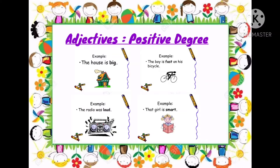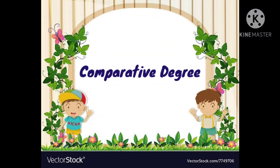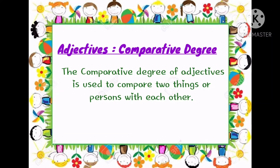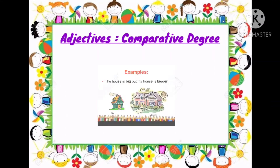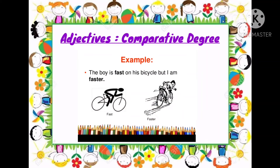Now let's study about the second degree of comparison, that is comparative degree of an adjective. The comparative degree of an adjective is used to compare two things or two persons with each other — it makes comparison between two things or two persons. For example, 'the house is big but my house is bigger' — here comparison is being made between two houses. Another example: 'the boy is fast on his bicycle but I am faster' — here also comparison is being made between two boys.